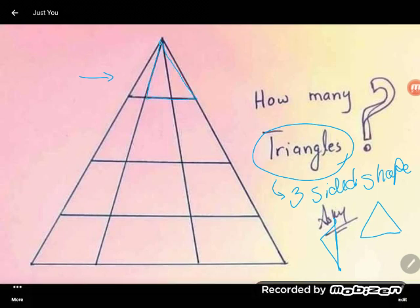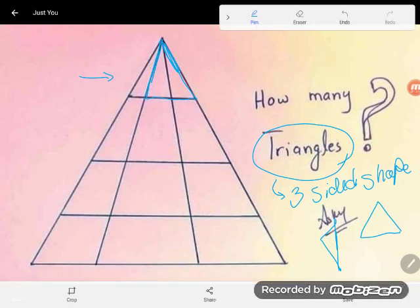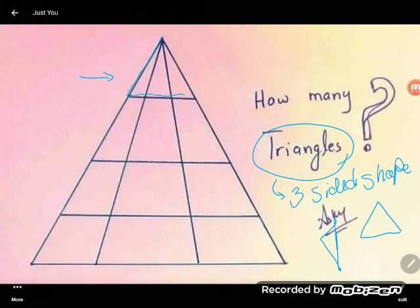That puts me at five triangles. So I made all the kind of like bigger size. Or I could take that entire thing all together and I'd get six. So again one two three or the bigger one four five or the biggest one six. So I got six triangles from that level.